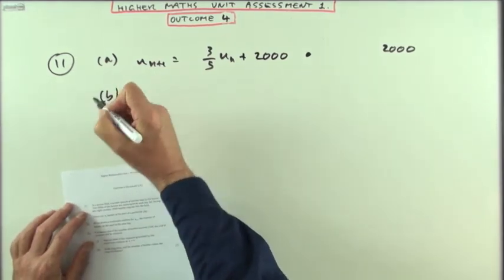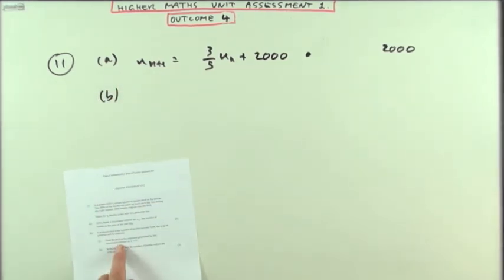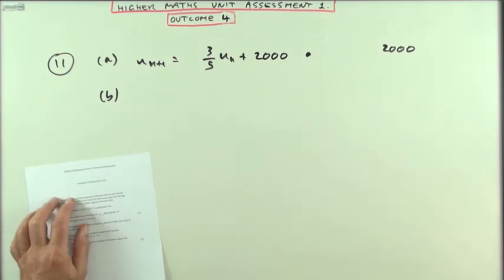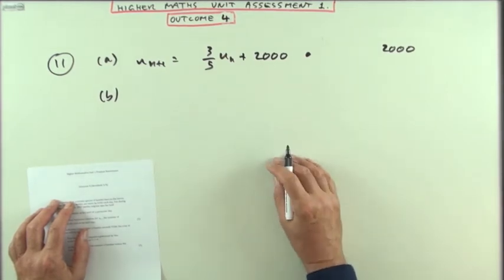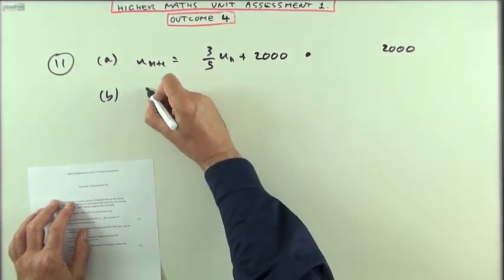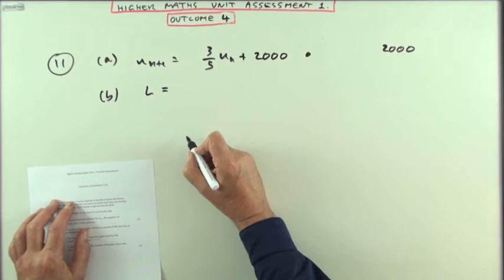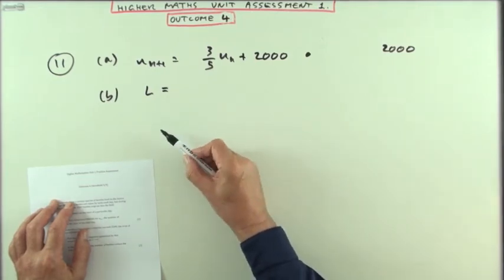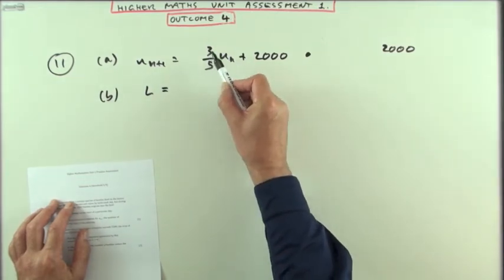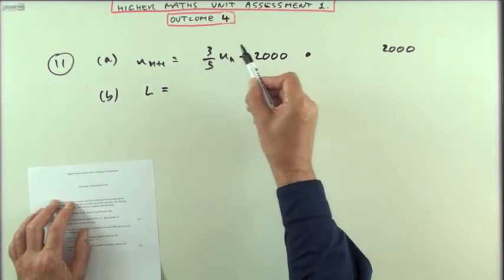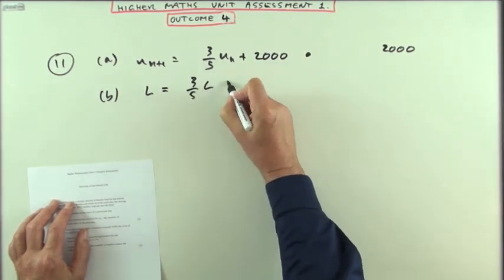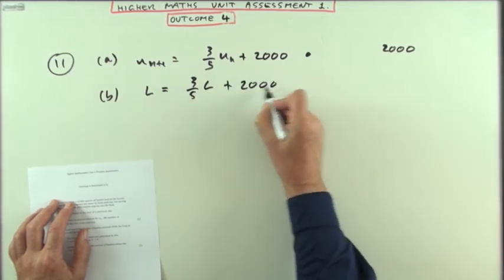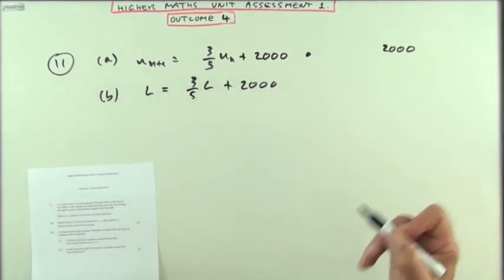Now, in part B, it says, find the limit of this sequence as n tends to infinity. Well, you could either write down the formula in the raw form or the collected form. That form would be L equals, well, in the raw form it simply means you've reached your limit if you multiply by three-fifths and add two-thousand, and you've still got the same number out. If you've got three-fifths of L plus two-thousand, and you work it out and it still gives you L, that's your limit.